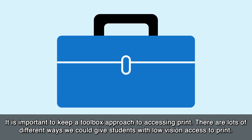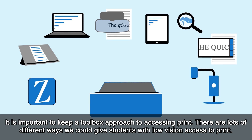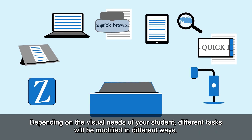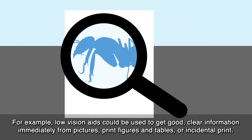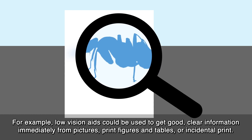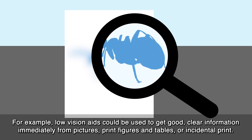It is important to keep a toolbox approach to accessing print. There are lots of different ways we could give students with low vision access to print. Depending on the visual needs of your student, different tasks will be modified in different ways. For example, low vision aids could be used to get good, clear information immediately from pictures, print figures and tables, or incidental print.